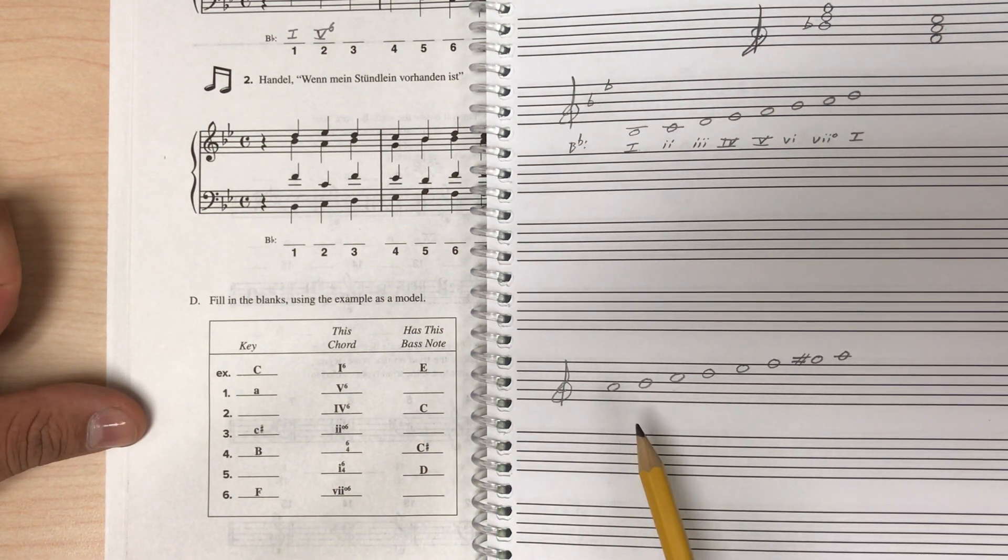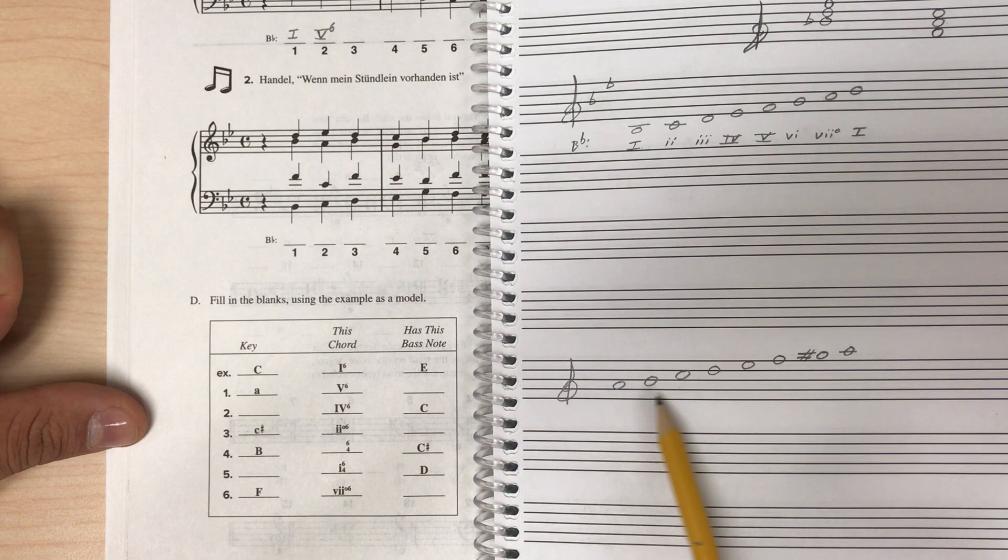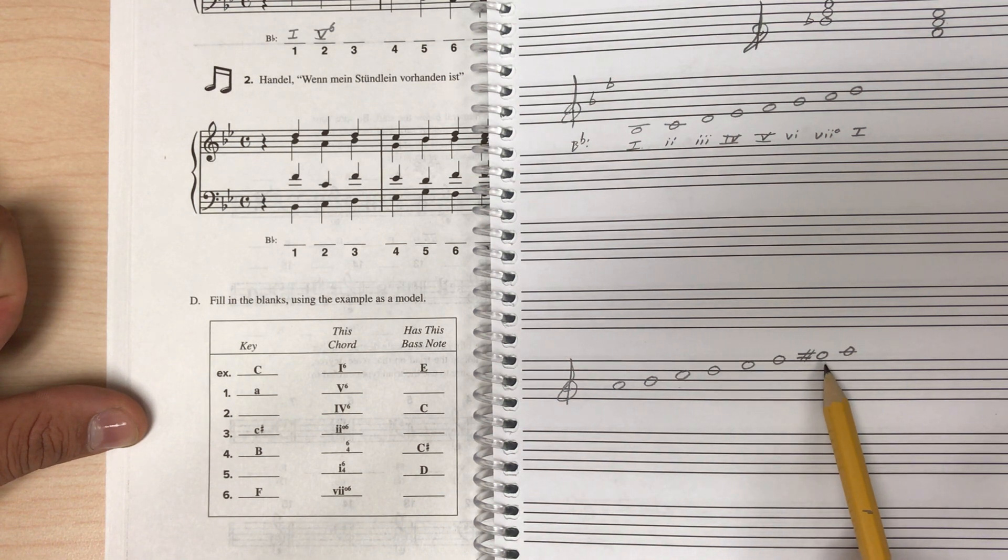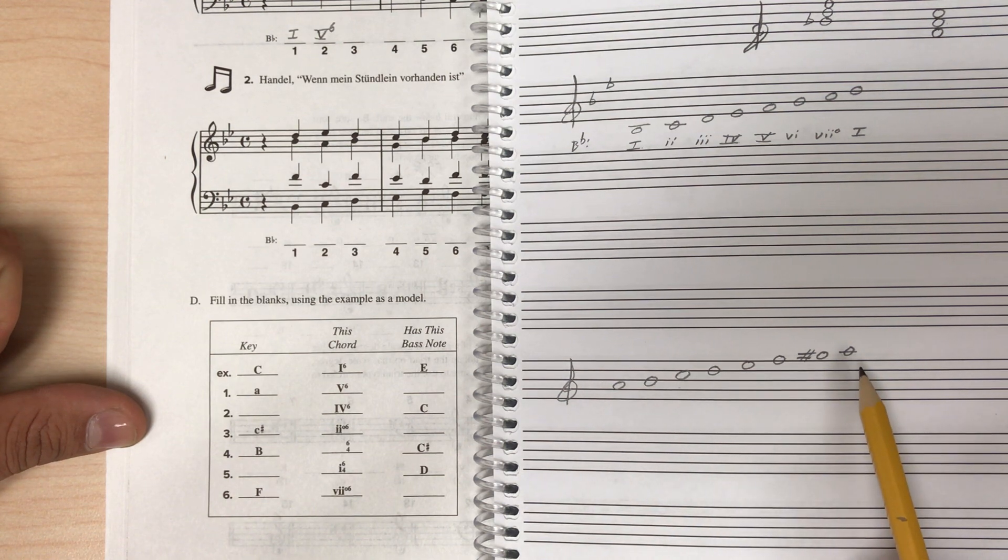So I started by writing out my A minor scale. I'm using harmonic minor, so I have that raised seventh, so this is my A harmonic minor scale.